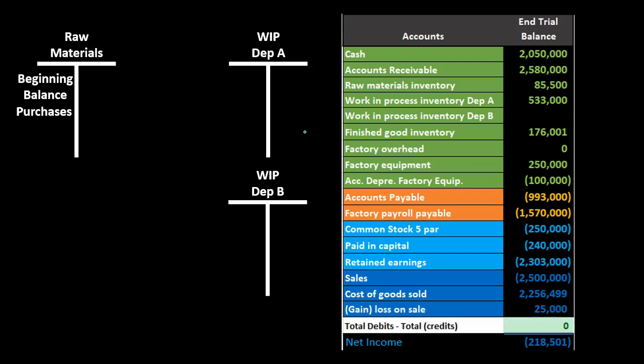In a job cost system, the work in process account is supported by a job cost sheet. In a process cost system, we still have work in process accounts, but we don't use job cost sheets because we're tracking by process — by department. We track inventory costs by whichever process or department the inventory is currently in.